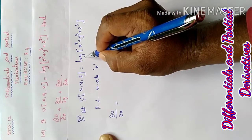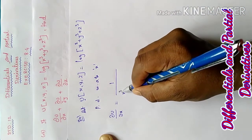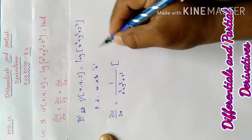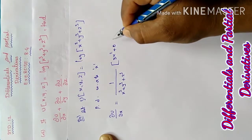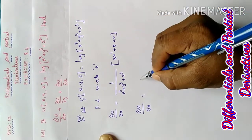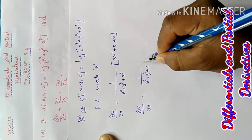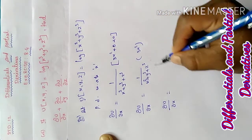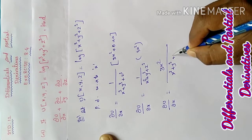This is the chain rule of log derivation: 1 by the inner term, which is x power 3 plus y power 3 plus z power 3. The derivative of the inner term with respect to x gives 3x squared, and the remaining terms are constants giving zero. Therefore, ∂u/∂x equals 1 by (x power 3 plus y power 3 plus z power 3) into 3x squared.